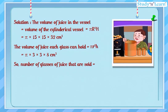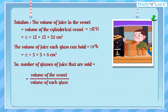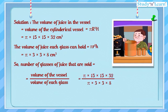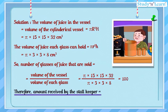So the number of glasses of juice that are sold equals volume of the vessel upon volume of each glass, that is pi into 15 into 15 into 32 upon pi into 3 into 3 into 8. On solving, we get 100. Therefore, the amount received by the stall keeper is equal to rupees 3 into 100, which is equal to rupees 300.